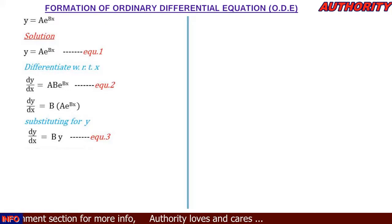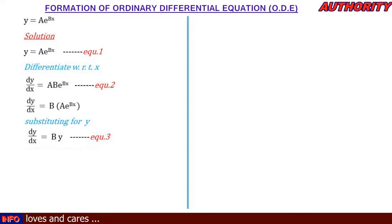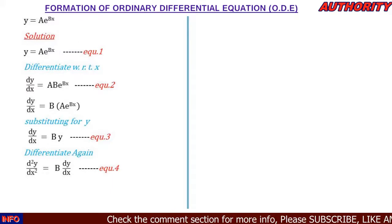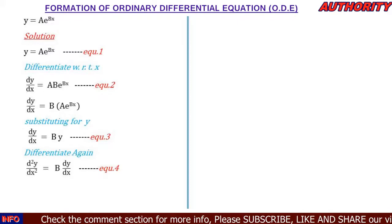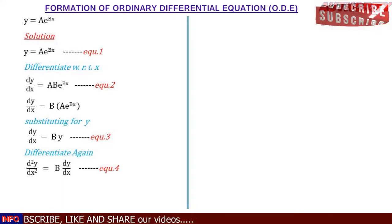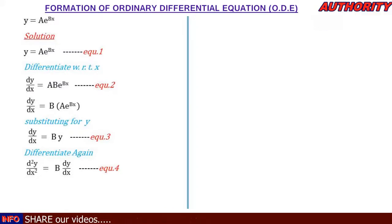We have two constants so we need to differentiate two times. The reason I substituted early is to make our work easier. Now let's differentiate dy/dx = by a second time. Differentiating dy/dx gives d²y/dx², and differentiating by gives b(dy/dx) using the product rule. So the second derivative gives us d²y/dx² = b(dy/dx). Let's call this equation four.